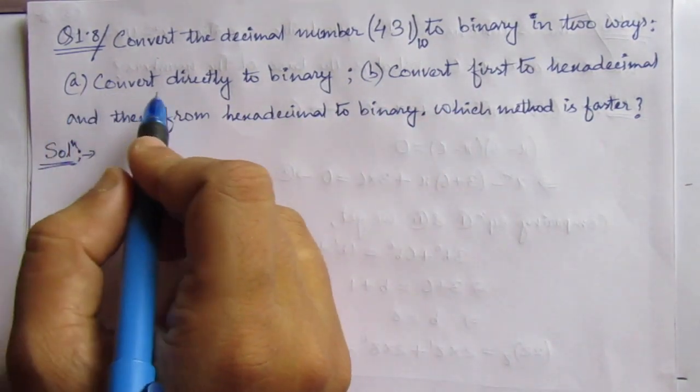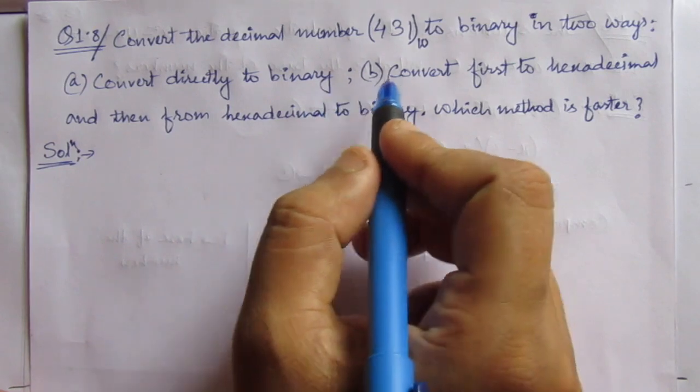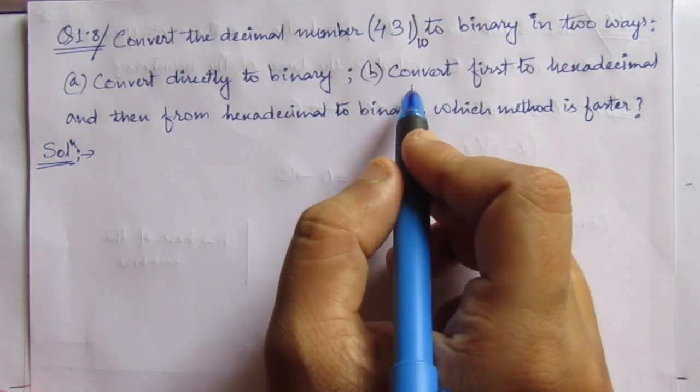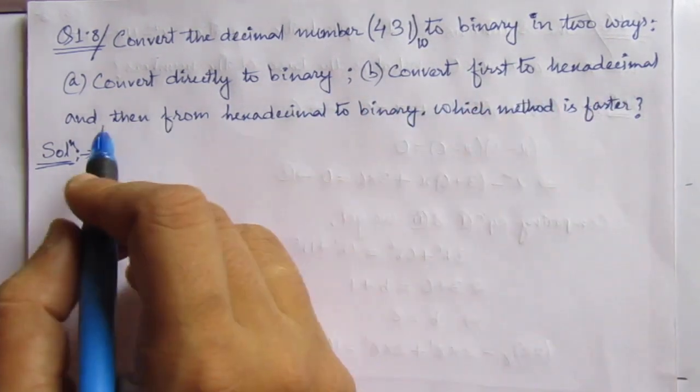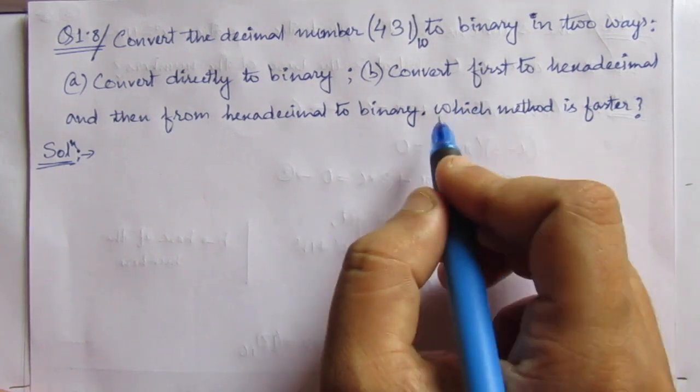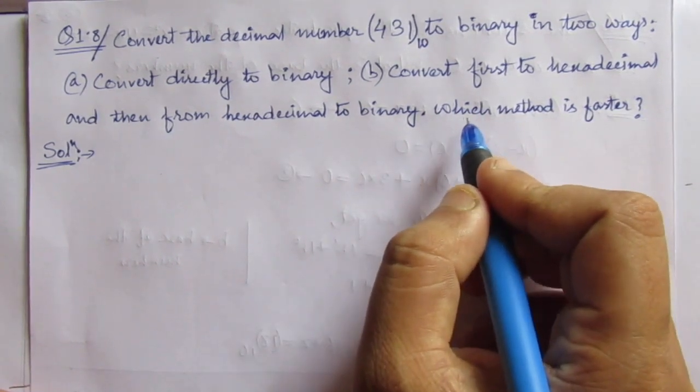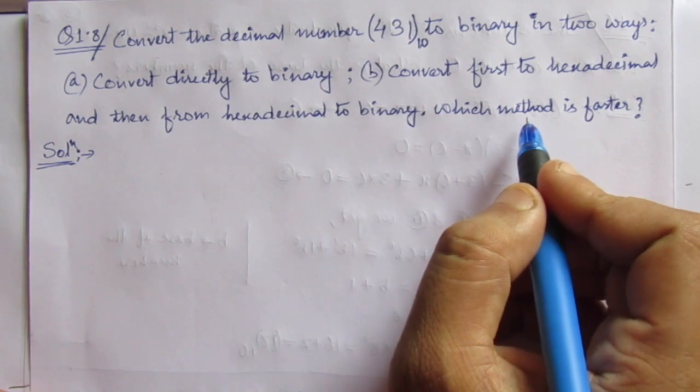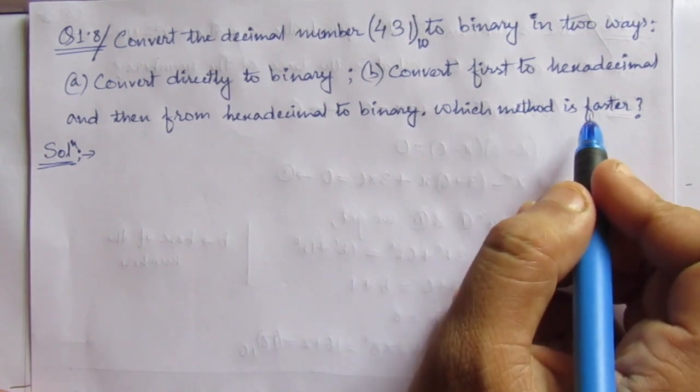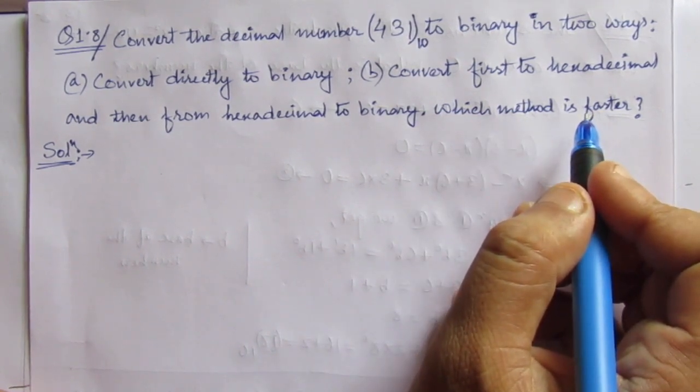First of all, the first one is to convert directly to binary. And second method is convert first to hexadecimal and then from hexadecimal to binary. And the third part of the question is we have to find out which method is faster. This faster will be the method that requires less operations.